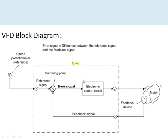The drive sends signals to the motor, and to confirm whether the motor is rotating at the desired speed, a feedback signal is required. This can be taken through an encoder or a tachometer. The actual speed and the reference speed are compared, and the drive issues further commands to the motor to increase or decrease its speed accordingly.